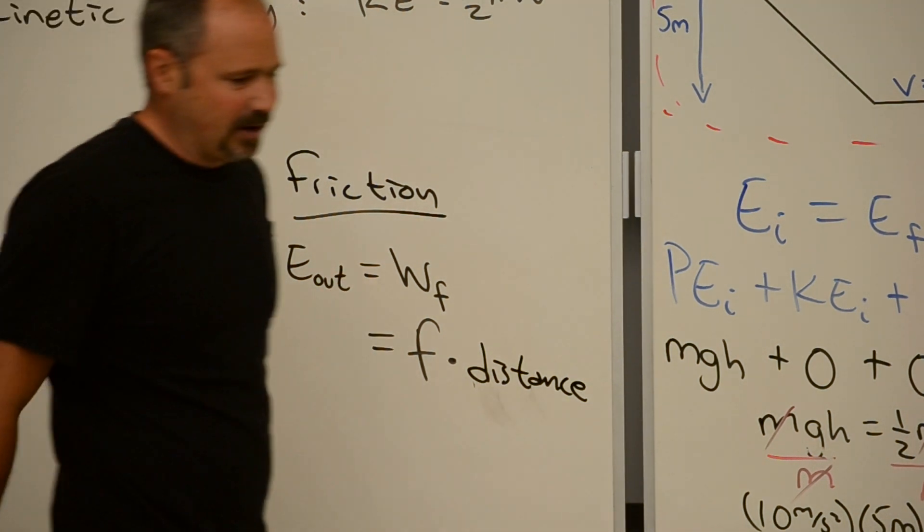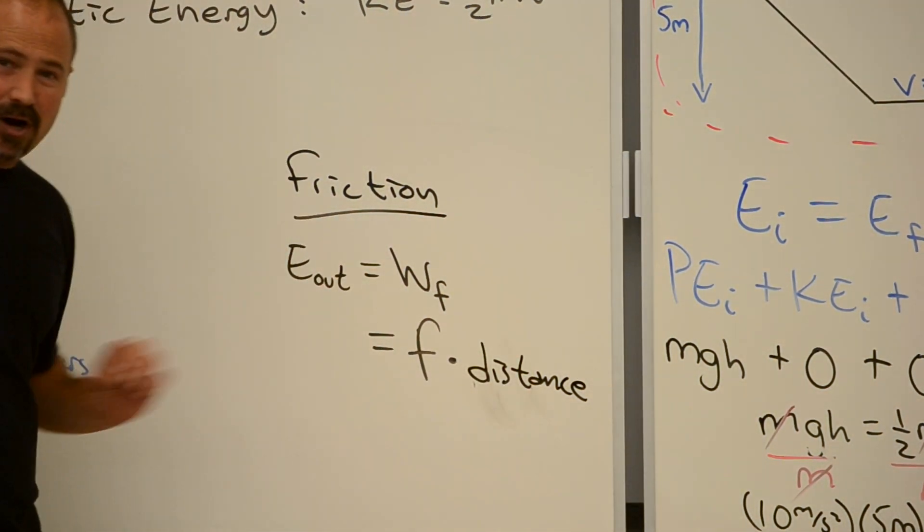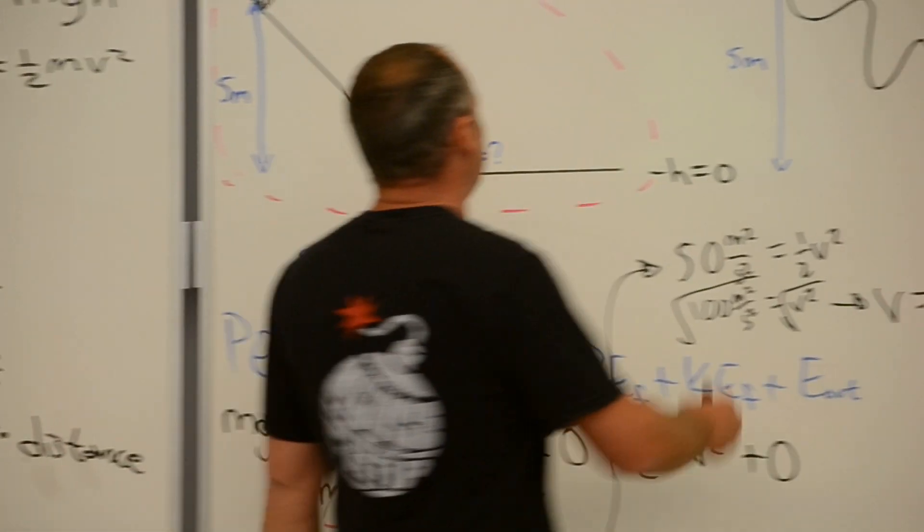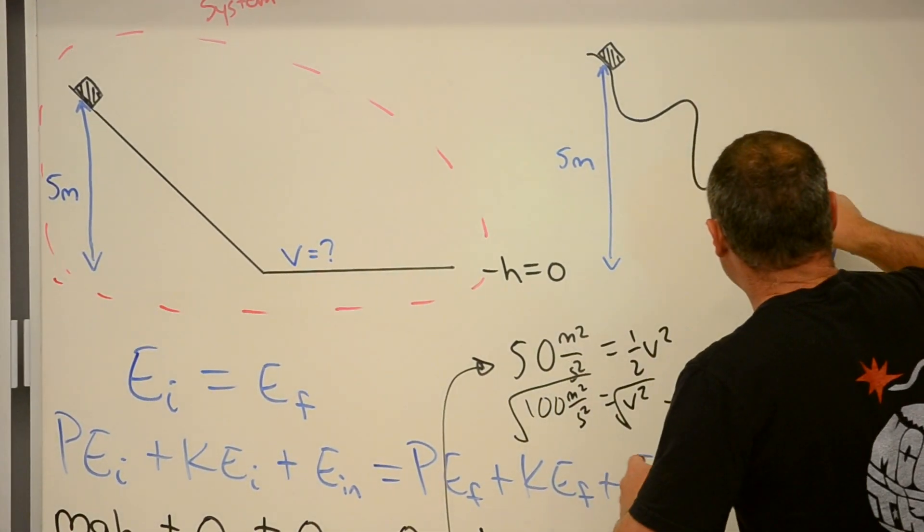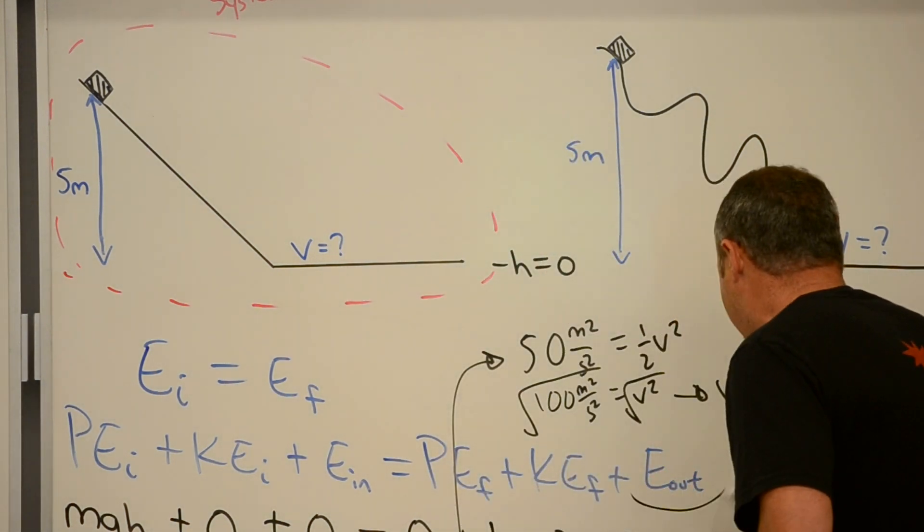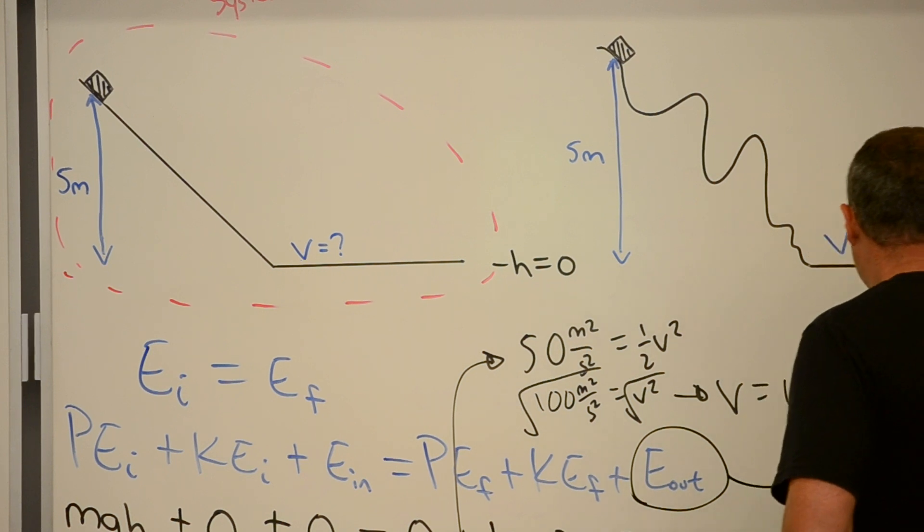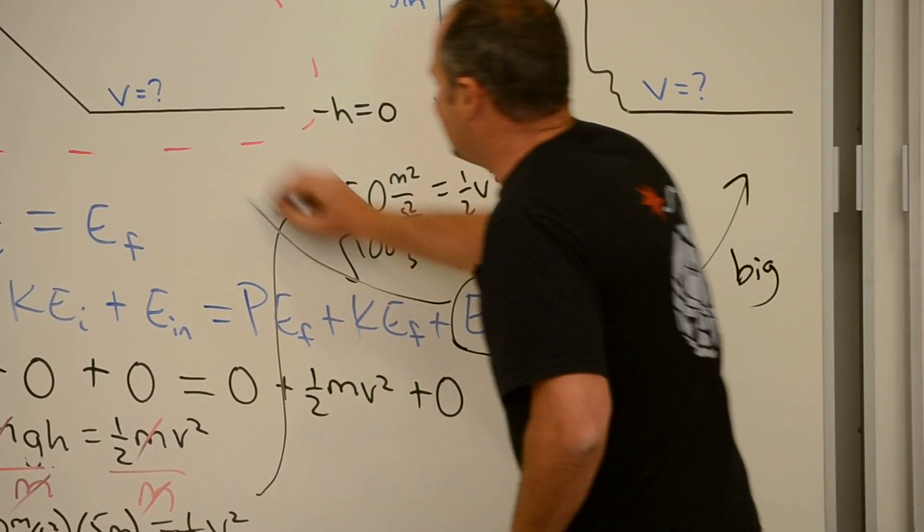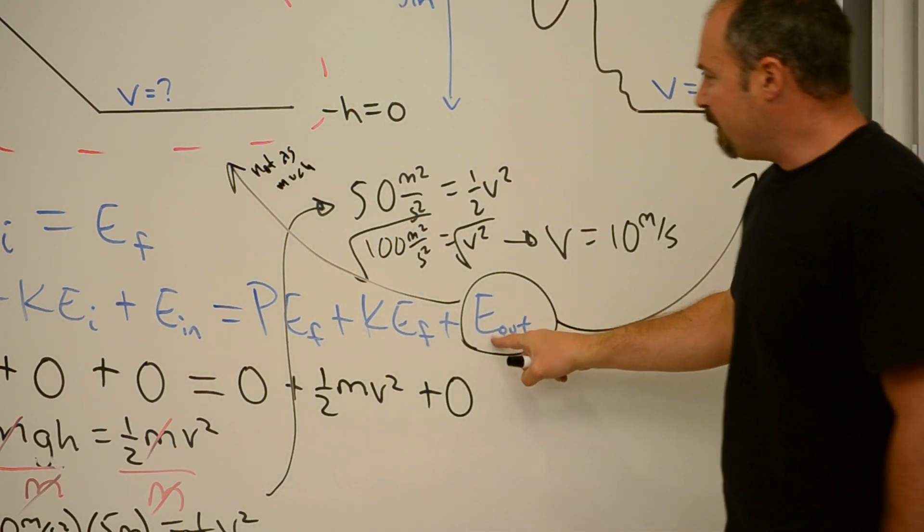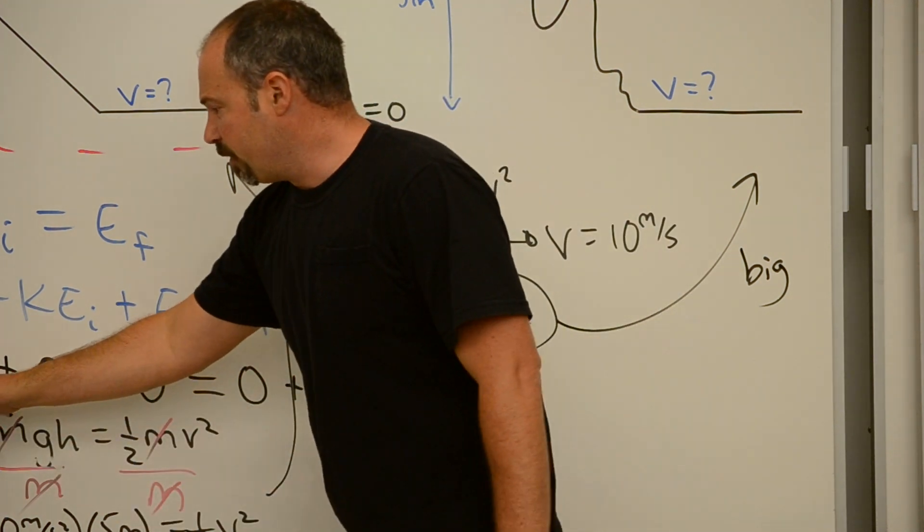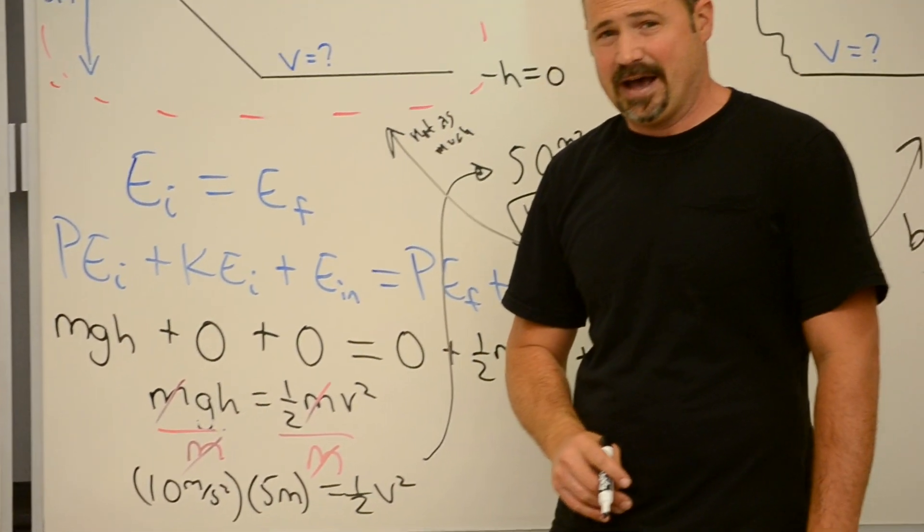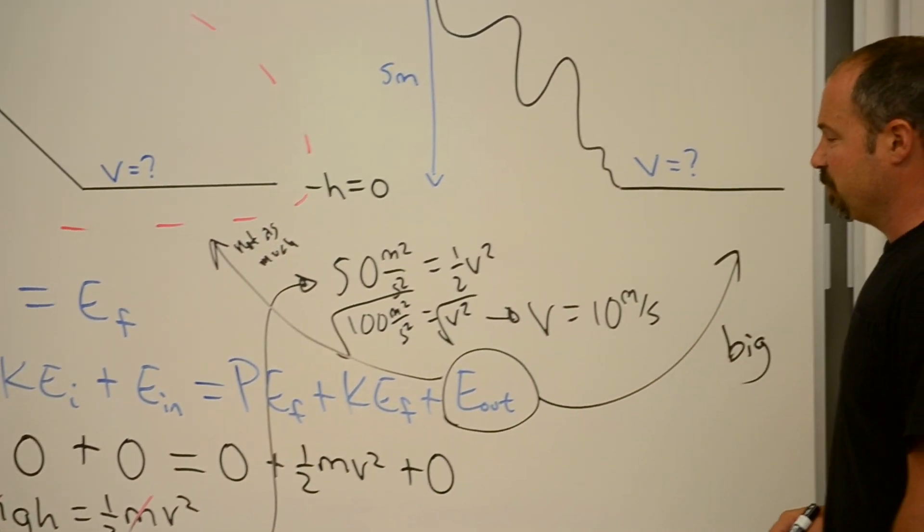But in this case, if you add in friction, you can see the distance traveled here is much greater than the distance traveled here. Therefore this energy out term will be big for this guy and not as big for this guy. The bigger this number is, the more it is subtracted from the potential energy of gravity and therefore the less kinetic energy you have. So that's how it works with friction.